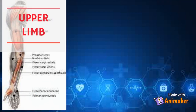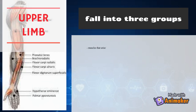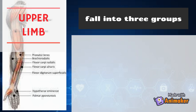The upper limb muscles fall into three groups. The first group includes muscles that arise from the shoulder girdle, cross the shoulder joint, and insert into the humerus. The second group causes movement of the elbow joint — these muscles enclose the humerus and insert on the forearm. The third group includes the muscles of the forearm, which insert on the hand bones and cause their movements.